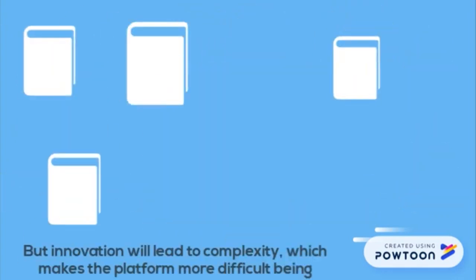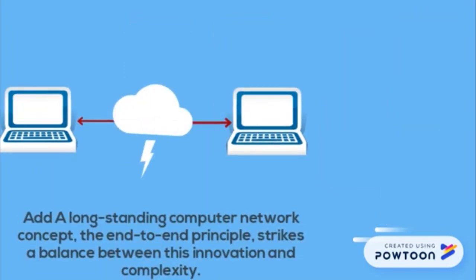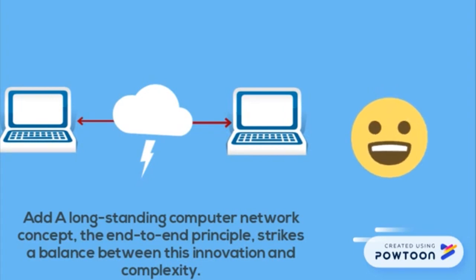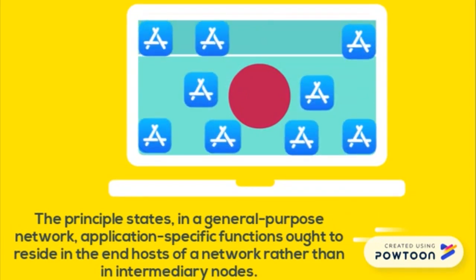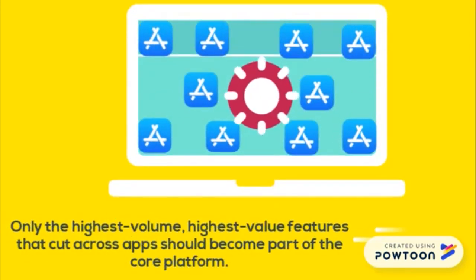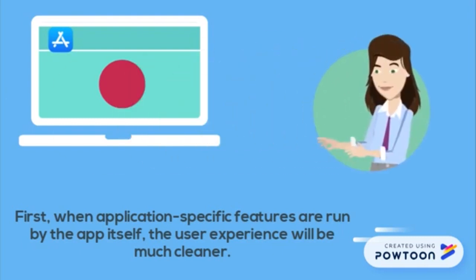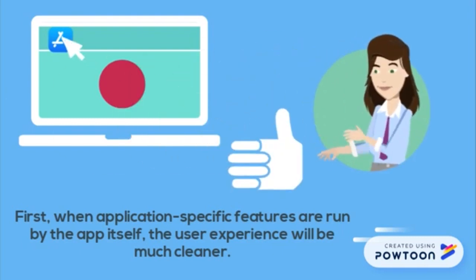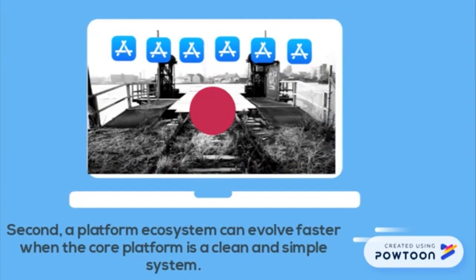However, innovation will lead to complexity, which makes the platform more difficult to navigate. A long-standing computer network concept, the end-to-end principle, strikes a balance between innovation and complexity. The principle states that in a general-purpose network, application-specific functions ought to reside in the end-hosts of a network rather than in intermediary nodes. Only the highest volume, highest value features that cut across apps should become part of the core platform. When application-specific features are run by the app itself, the user experience will be much cleaner, and a platform ecosystem can evolve faster when the core platform is a clean and simple system.